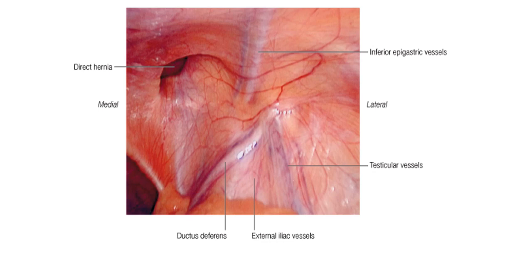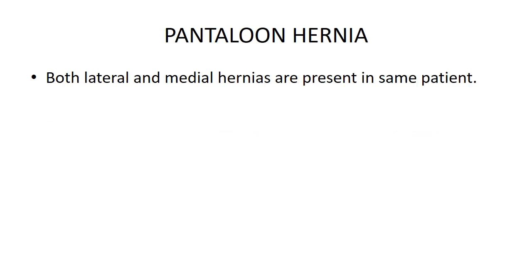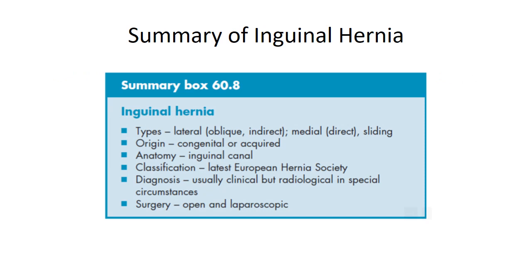A sliding hernia is due to weakening of the abdominal wall, occurs at the deep inguinal ring lateral to the inferior epigastric vessels, and contains retroperitoneal fatty tissue, or the sac has formed secondarily. A pantaloon hernia is when both lateral and medial hernias are present in the same patient. Inguinal hernia types include: lateral (oblique, indirect), medial (direct), and sliding; origin is congenital or acquired.